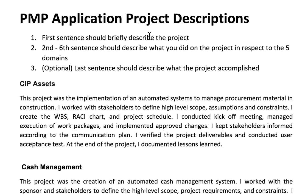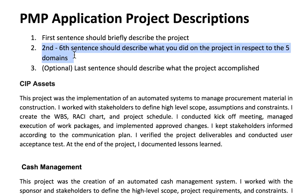The first thing you want to do is to write a brief sentence describing your project. Your next two to six sentences should describe what you did on the project in respect to the five domains. So if you claimed hours for all five domains, you need five sentences here — one sentence describing what you did in each of those domains. If you didn't claim hours for one or more of those domains, then you don't need all five sentences here.